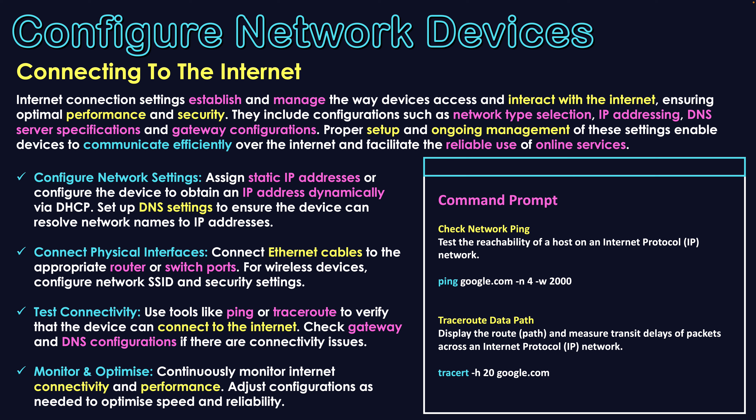Some steps that can assist with this — and I'm showing command prompt on the right — include using ping and traceroute to assess how well we are connecting with specific websites and platforms, tested through command prompt using the addresses of the sites you want to connect with. The first tool is configuring network settings: assigning static IP addresses or configuring devices to obtain IP addresses dynamically through DHCP, and setting up DNS settings to ensure devices can resolve network names to specific IP addresses.